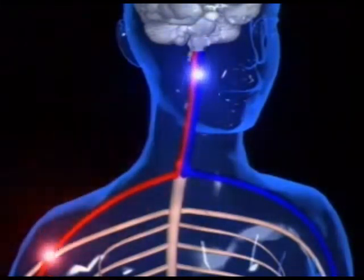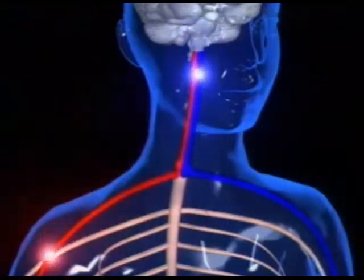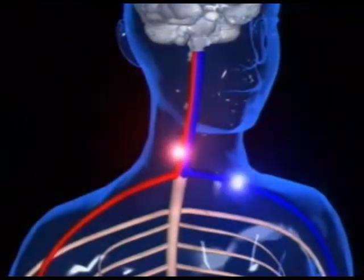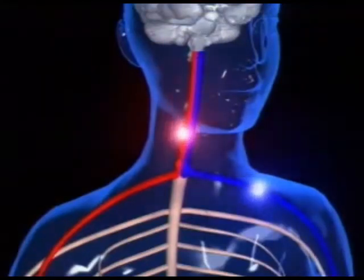The former are made up of sensory nerve cells or neurons. The latter are made up of motor neurons. They go to all parts of the body.